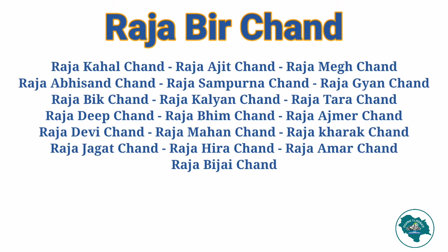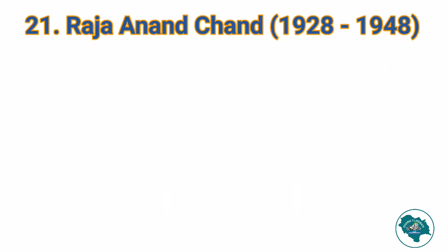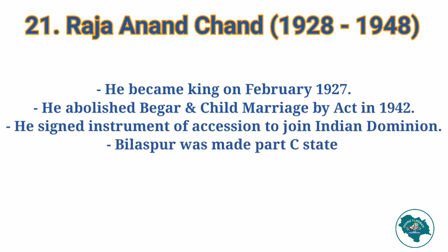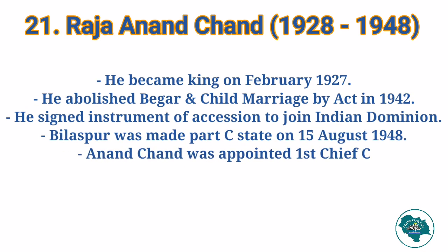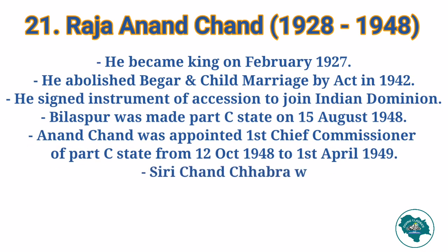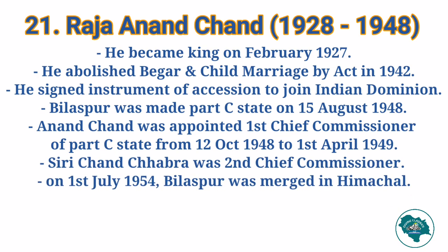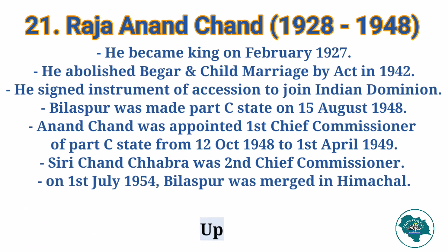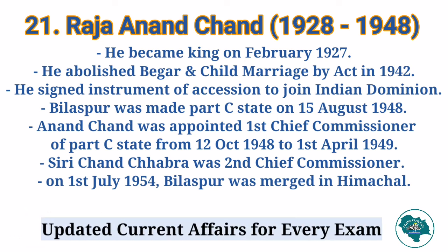Then came the last ruler of Bilaspur, Raja Anand Chand, from 1928 to 1948. He succeeded the throne in February 1927. He passed an act to abolish Bekar and child marriage in 1942. He signed the instrument of accession to join the Indian dominion. Bilaspur was made a Part C state on 15th August 1948, and on 12th October 1948 he was appointed the first Chief Commissioner of the Part C state, continuing up to 1st April 1949. The second Chief Commissioner was Sreechand Chhabra.